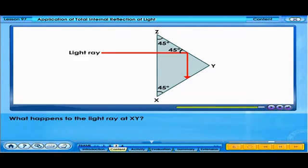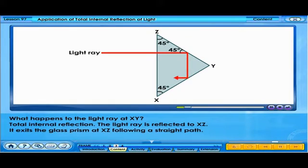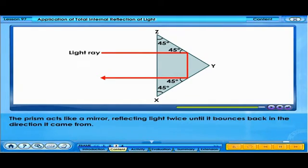What happens to the light ray at XY? Total internal reflection. The light ray is reflected to XZ. It exits the glass prism at XZ following a straight path. The prism acts like a mirror, reflecting light twice until it bounces back in the direction it came from.